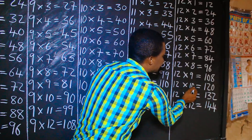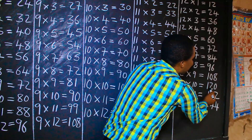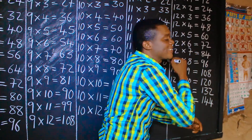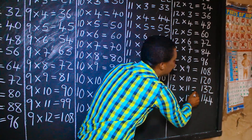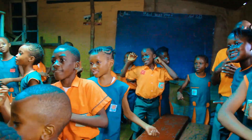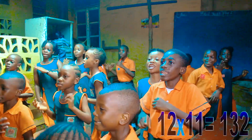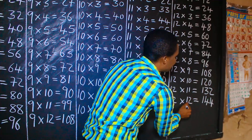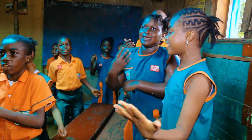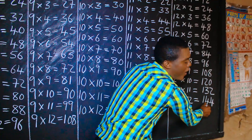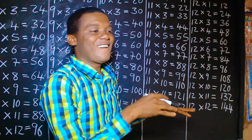12 times 10 is one hundred and twenty. 12 times 11 is one hundred and thirty-two. 12 times 12 is one hundred and forty-four.